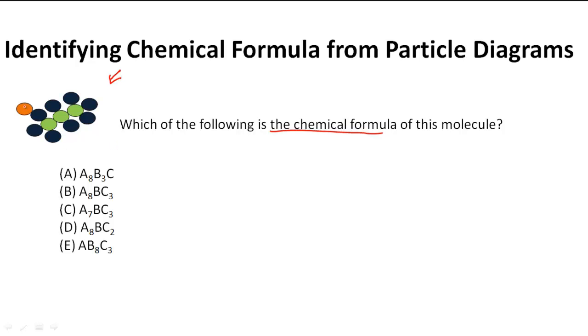Remember that this orange oval here stands for element B, this blue one is element A, and this one is element C.